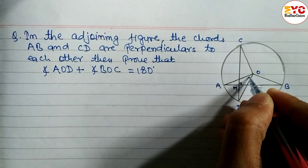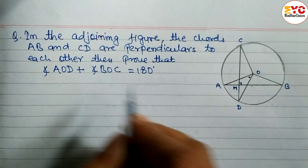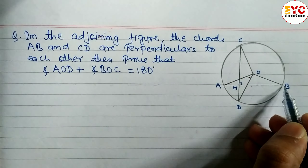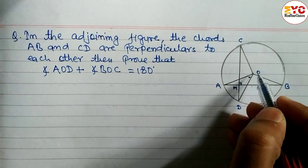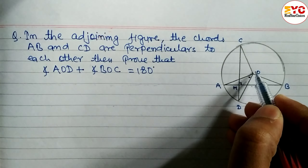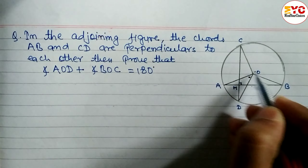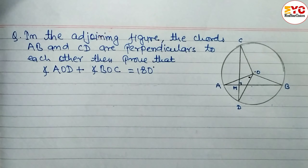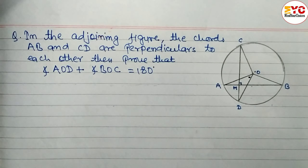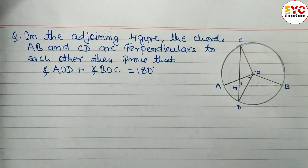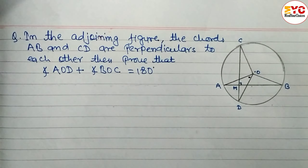Angle AOD plus angle BOC — these two angles — BOC is equal to 180°. So we have to prove that angle AOD plus angle BOC is equal to 180°. Let's take a start. First of all, what we have to write under 'Given'.